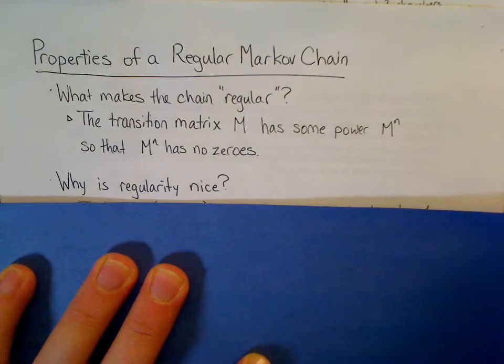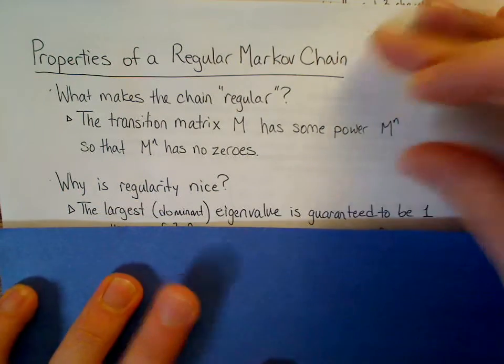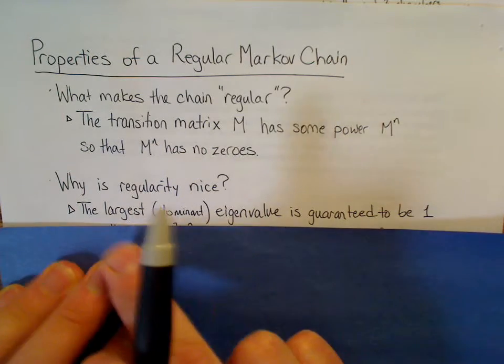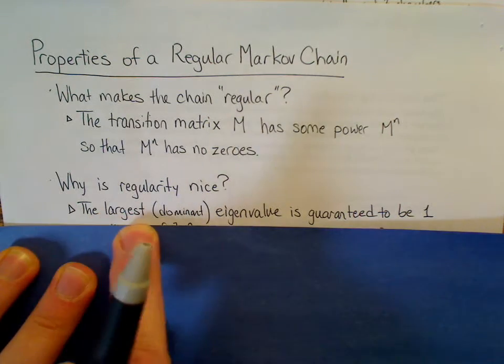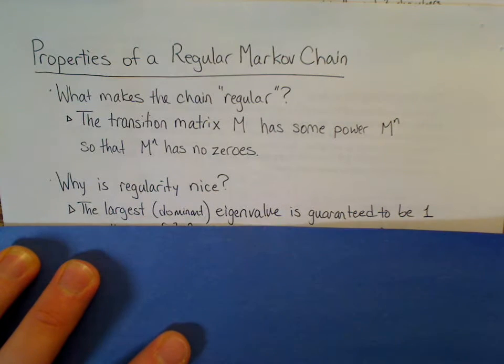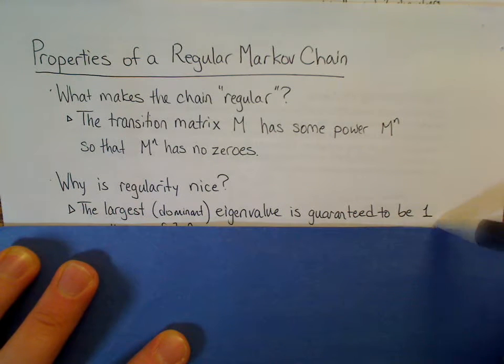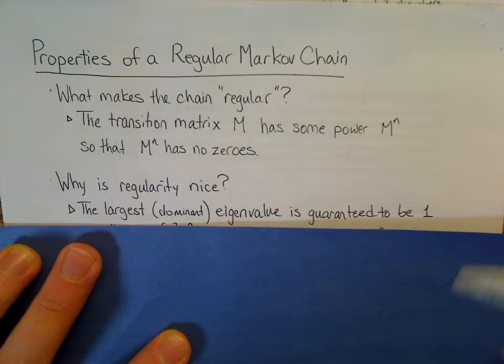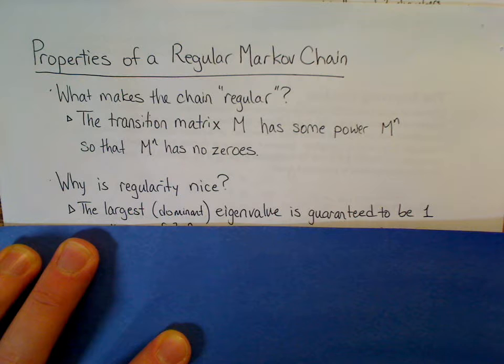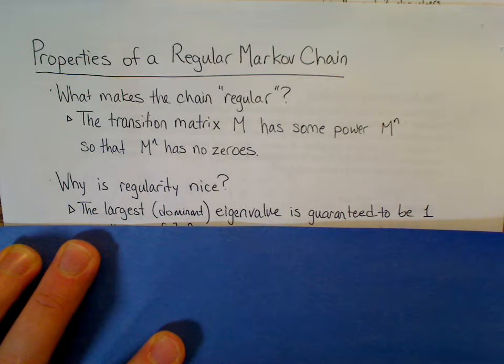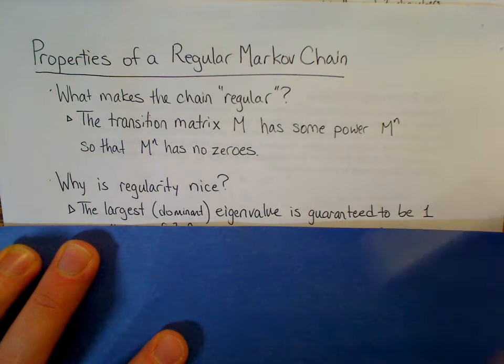Why is regularity nice? Well, once we know it's regular, the Perron-Frobenius theorem guarantees that the largest, or the dominant eigenvalue, is going to be 1. Which means that if we wanted to find eigenvectors to go with that dominant eigenvalue, we don't have to go find the eigenvalues. We don't have to solve the characteristic polynomial that goes with it. We just say, alright, eigenvalue is 1, and move on.